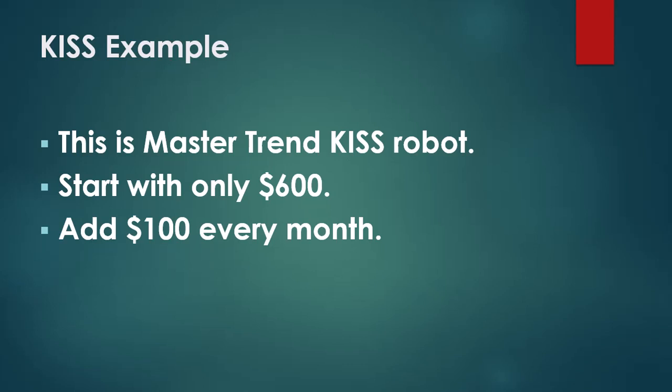We're going to start with only $600 — please don't ask why $600, I made it up. I had an account about a year ago that had $600 in it. And I'm going to add $100 every month. That's also random — I figure $100 is a round number almost anyone could do. So let's say you have $600 from your seat cushions and you're going to start trading, adding $100 every month.